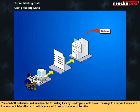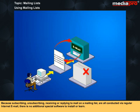You can both subscribe and unsubscribe to mailing lists by sending a simple email message to a server known as a list serve, which has a list to which you want to subscribe or unsubscribe. Because subscribing, unsubscribing, receiving or replying to mail on a mailing list are all conducted via regular internet email, there is no additional special software to install or learn.